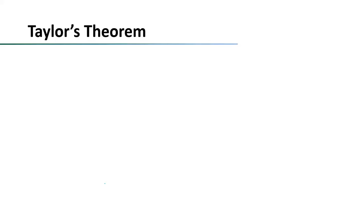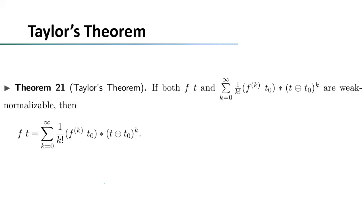The last theorem is Taylor's theorem, which means you can get f applied on t by summing up all the k-th order derivatives multiplied by k-factorial of t minus t0. The proof of this theorem is also similar to the previous ones, so we omit it here.